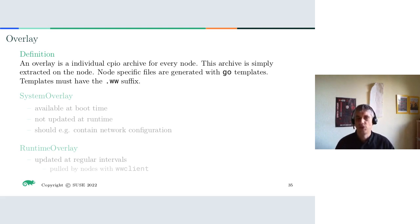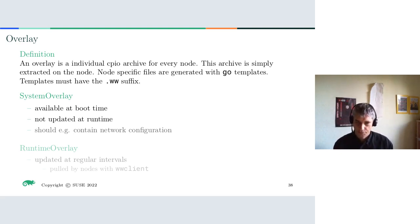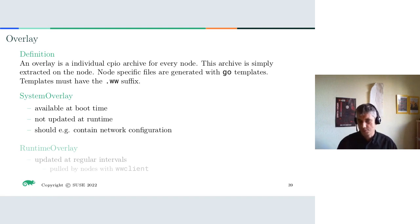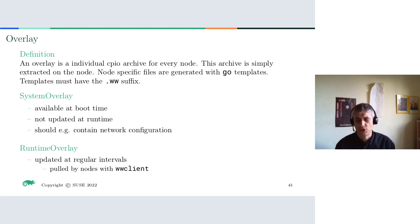We use Go templates for the overlays, giving a lot of versatility with variables. There are two kinds of overlays: the system overlay, which is applied immediately to the node and contains network config and similar static settings — it is never updated at runtime. The other is the runtime overlay, which is updated at regular intervals so you can have dynamic configuration. If you want to change things without rebooting the whole cluster, you put those changes into the runtime overlay.